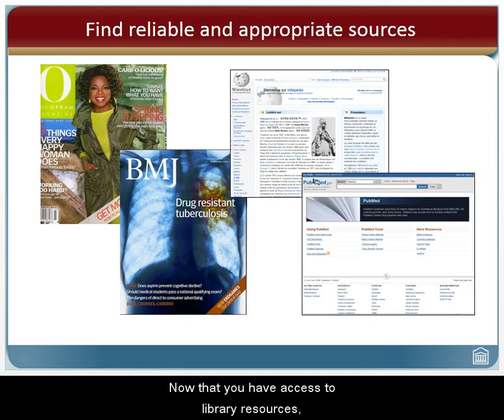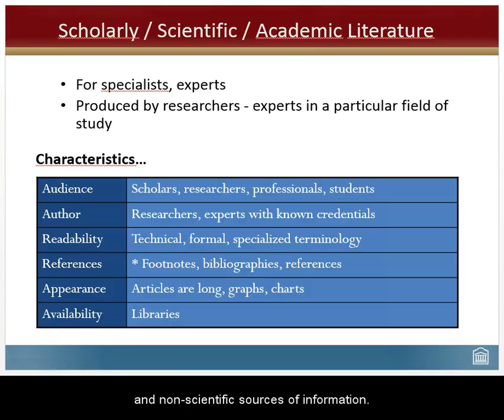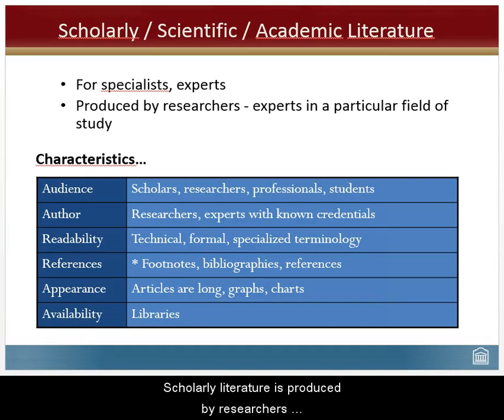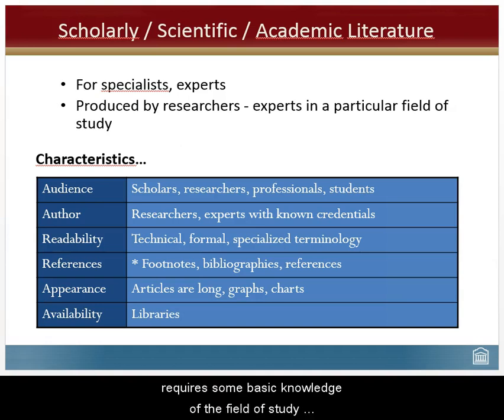Now that you have access to library resources, let's see what are the differences between scientific and non-scientific sources of information. Scholarly literature is produced by researchers specialized in a particular field of study, and the information they convey is intended for specialists in the field. Scientific literature is by definition very specialized and requires some basic knowledge of the field of study to fully understand the information communicated.